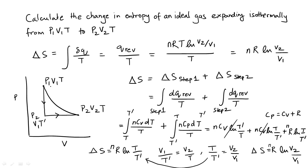So the change in entropy is independent of what reversible path we have followed to calculate it. The change in entropy depends only on the initial and the final equilibrium states of the system.